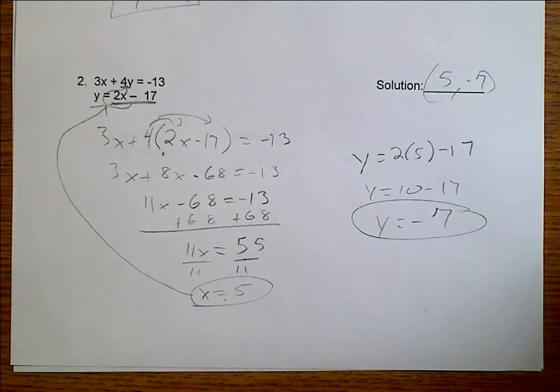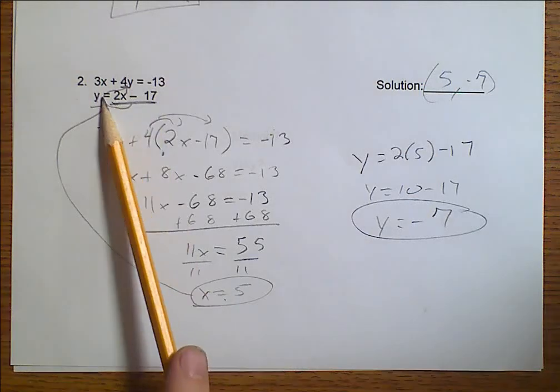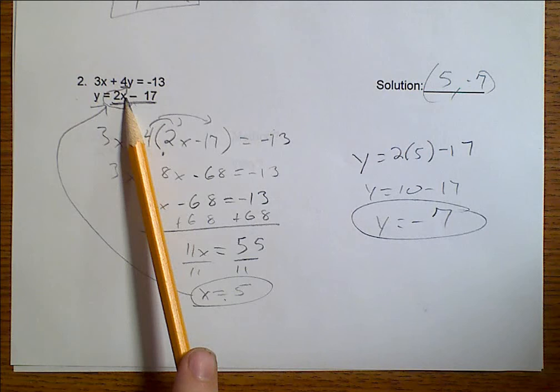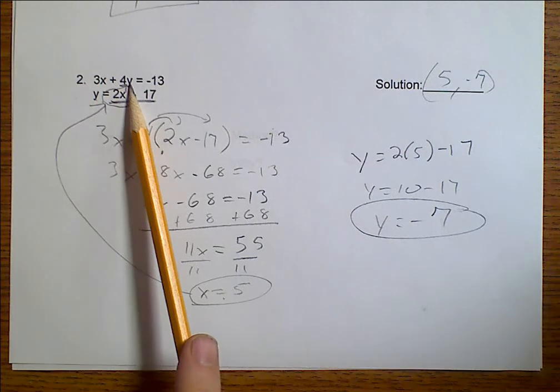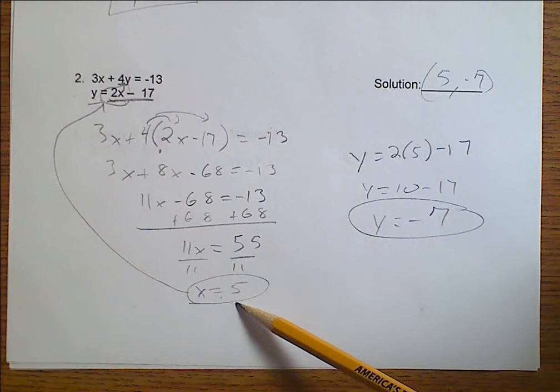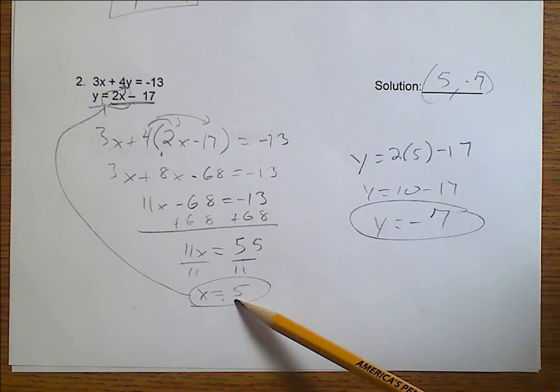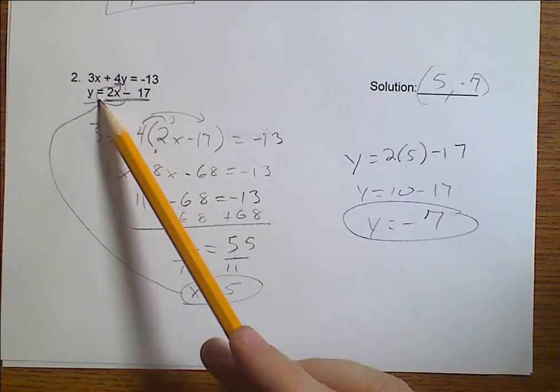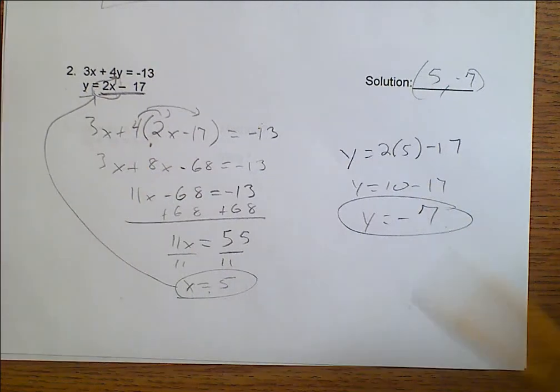This is all substitution is. First, we figure out what one variable is. We plug that into the other equation and solve for one variable. Now that one variable is solved for, we plug that back into the first equation we used and we'll solve for the second variable.